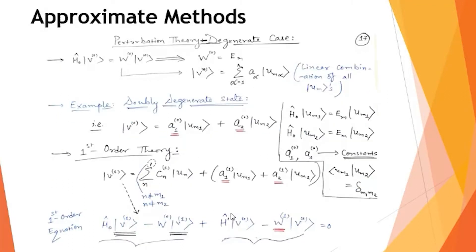Since we have obtained the second-order energy correction w2 and the second-order eigenfunction correction v2, we can now examine examples of second-order corrections. But before that, we can develop perturbation theory for the degenerate case. Everything discussed so far was for the non-degenerate case, meaning corresponding to each energy eigenvalue there exists only one energy eigenstate.